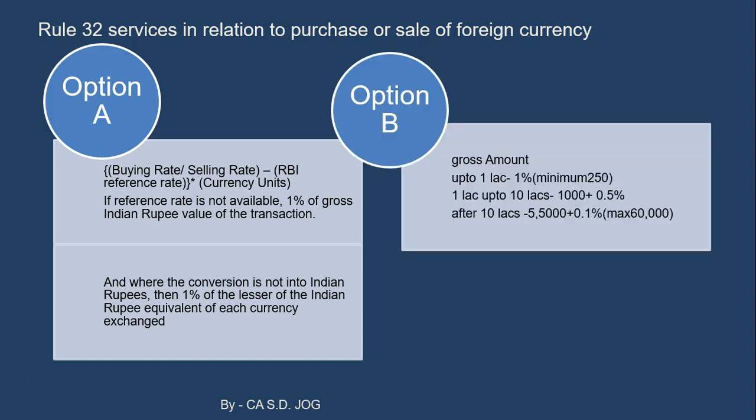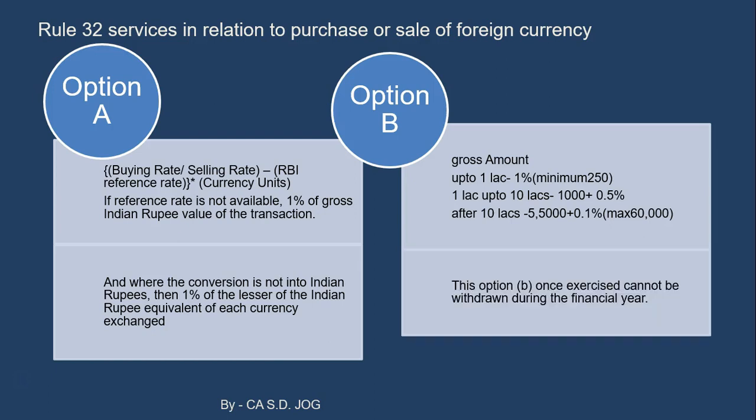If Option A is not applied, there is another option — Option B — which is simpler. Gross amount up to Rs. 1 lakh: 1% or minimum Rs. 250 will be the value of services. From Rs. 1 lakh to Rs. 10 lakh: Rs. 1,000 plus 0.5%. Option B, once exercised, cannot be withdrawn during a financial year. These money exchangers can opt either Option A or Option B for a financial year — they cannot change in between.